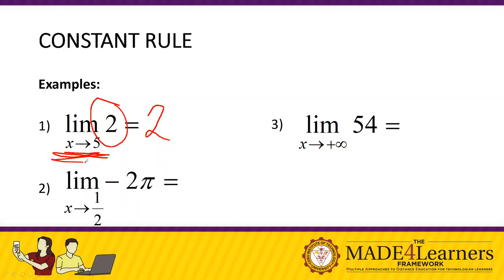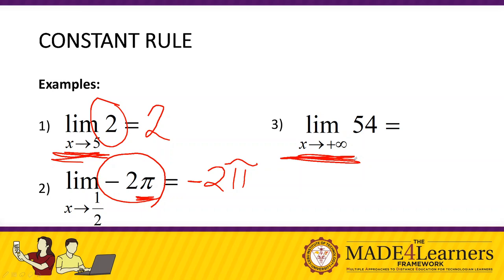Regardless of x approaching 5, the limit is just the constant itself, so it's 2. For number two, we have the limit of negative 2π as x approaches one-half. Remember that π is also a constant, equal to approximately 3.14. So the answer is just the constant itself — negative 2π. For number three, the limit of 54 as x approaches positive infinity: even though x is approaching infinity, this is still a constant function, so the answer is just 54.